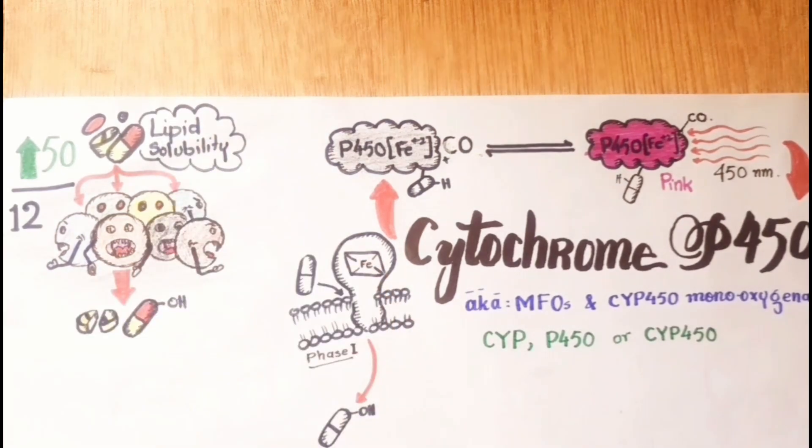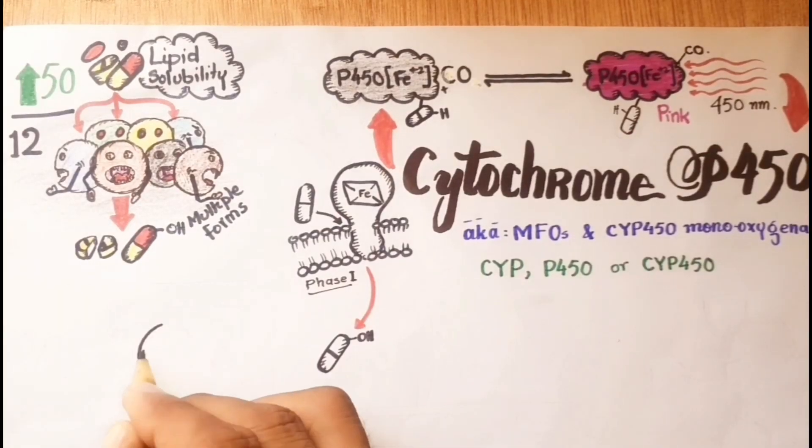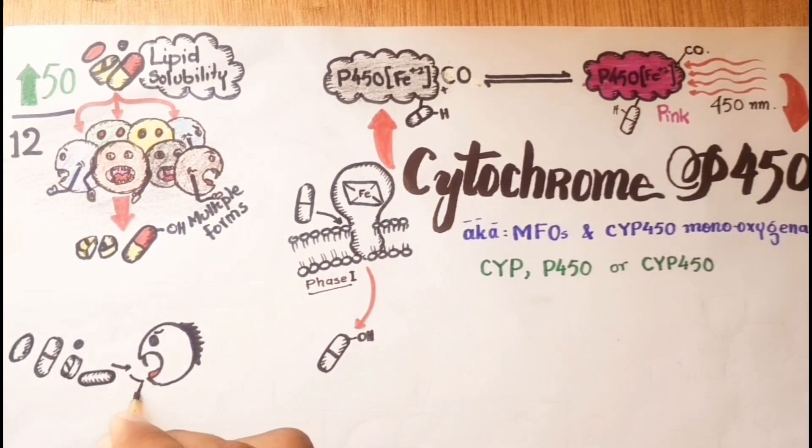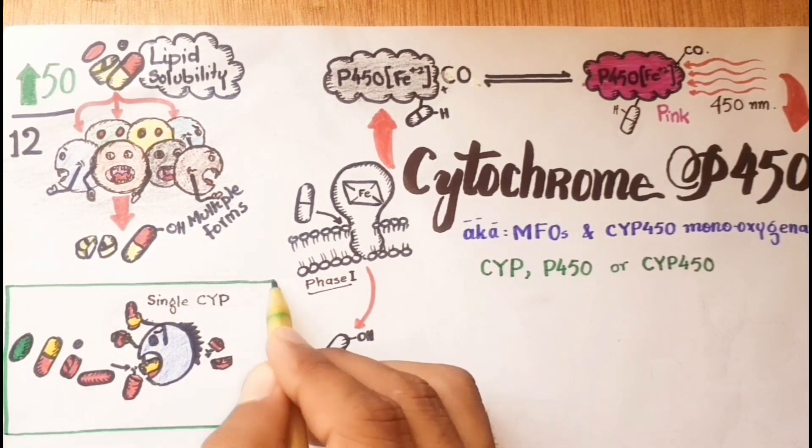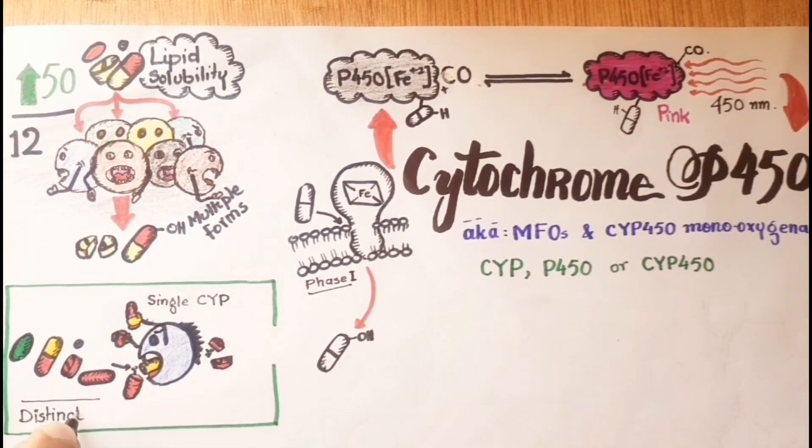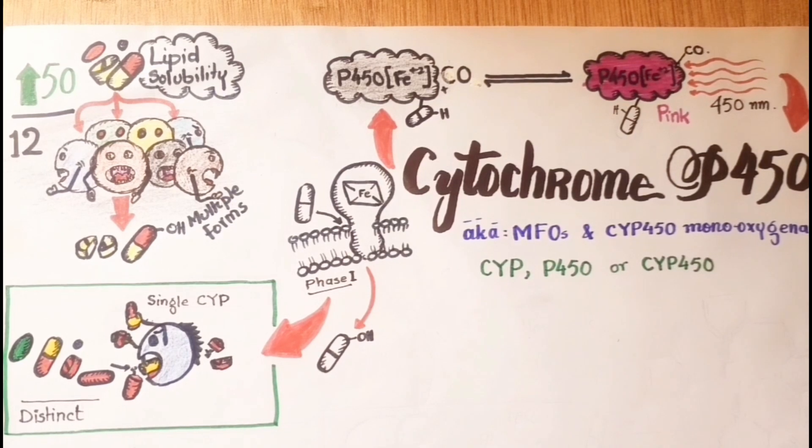The cytochrome P450 enzymes carry out drug metabolism and metabolize many structurally diverse chemicals. This is due to the multiple forms of cytochrome P450 enzymes and the capacity of a single cytochrome P450 enzyme. In addition, cytochrome P450 enzymes can metabolize a single compound at different positions on the molecule. The cytochrome P450 enzymes are considered unselective to bind and metabolize multiple substrates.